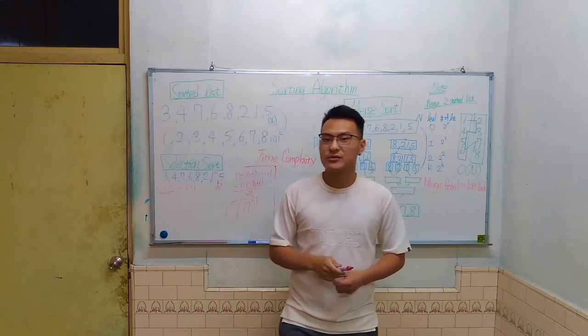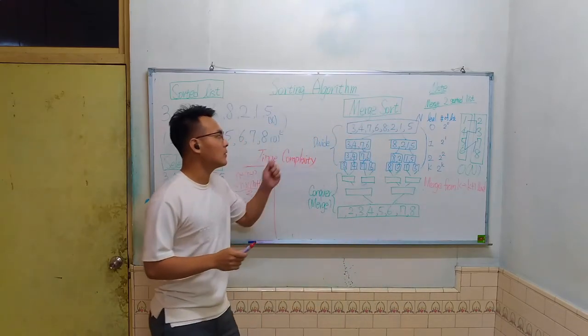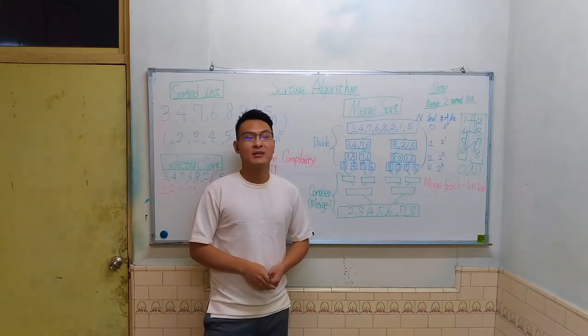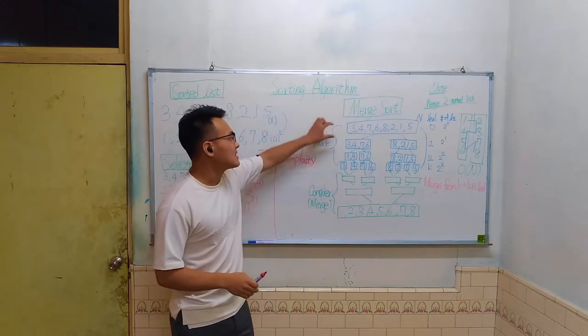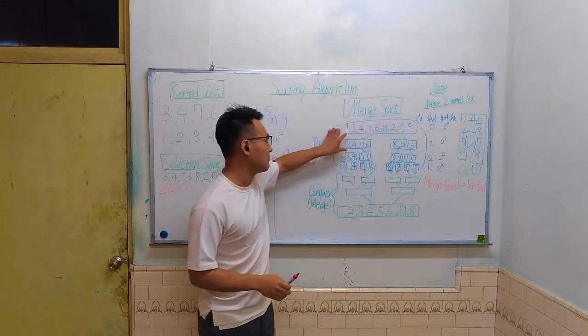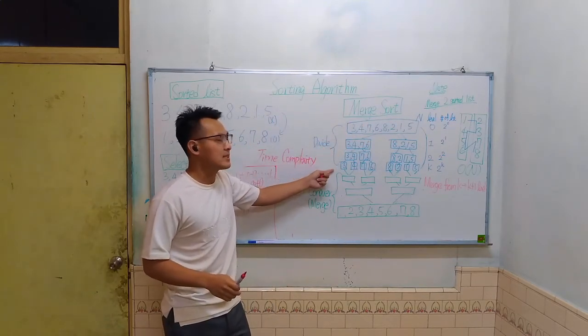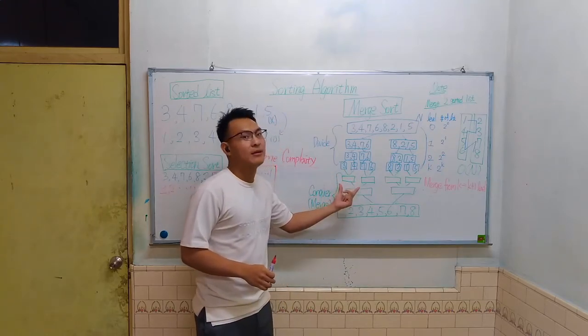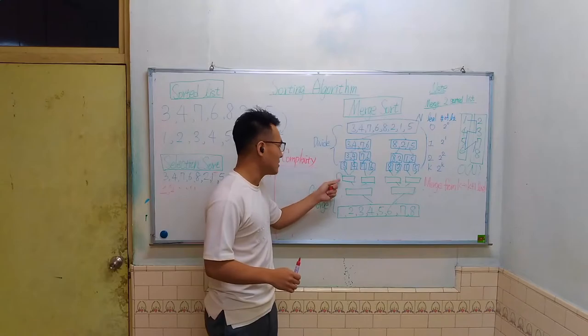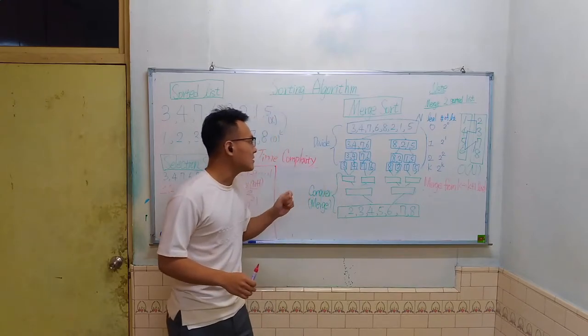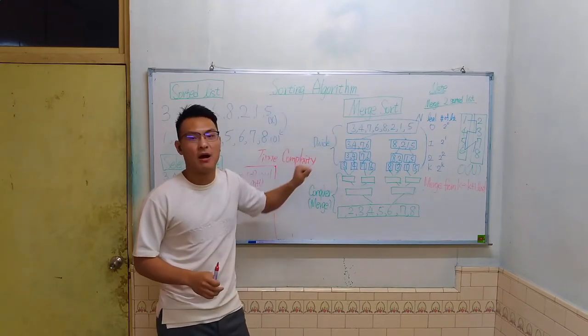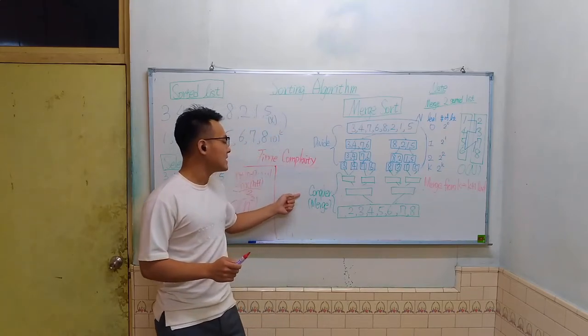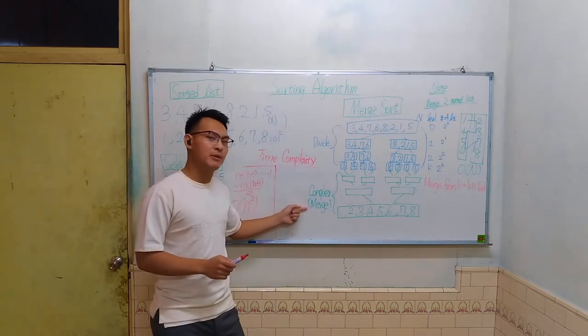So now I'm going to introduce the second algorithm. It's called merge sort. And merge sort is a divide and conquer algorithm based on dividing the list into several sublists. And when the sublists contain only one element, we're going to merge them together in an order that results in a sorted list. So I'm going to skip the divide part because it is too simple. And before we step into the conquer or the merge part, let's take a quick look at the note.